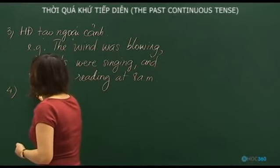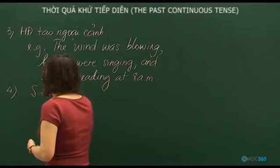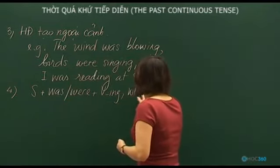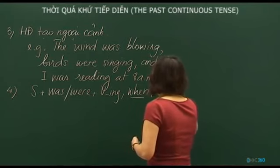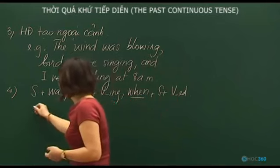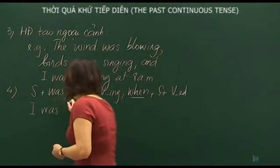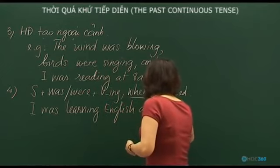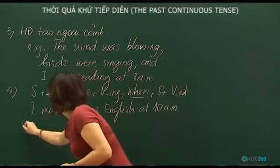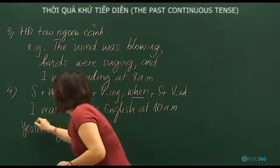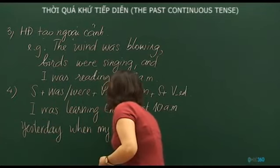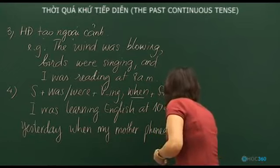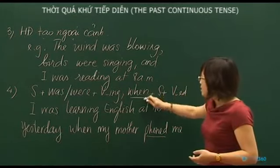The structure is: Subject + was/were + verb-ing + when + subject + simple past verb. For example: 'I was learning English at 10am yesterday when my mother called me.' Note that after 'phone' there is no preposition.